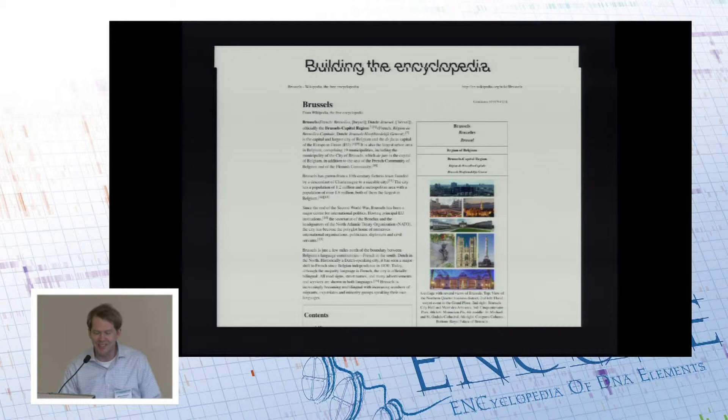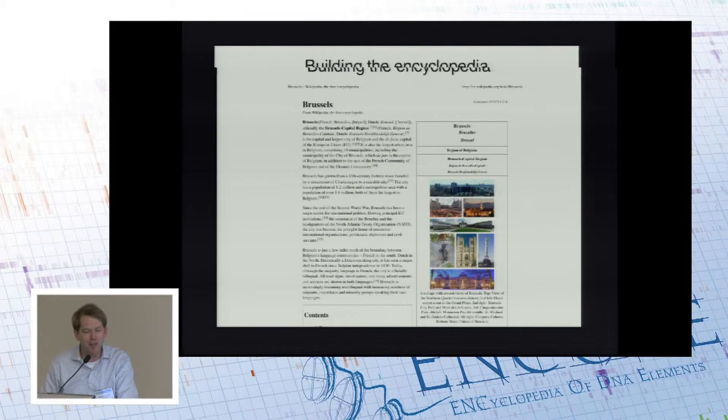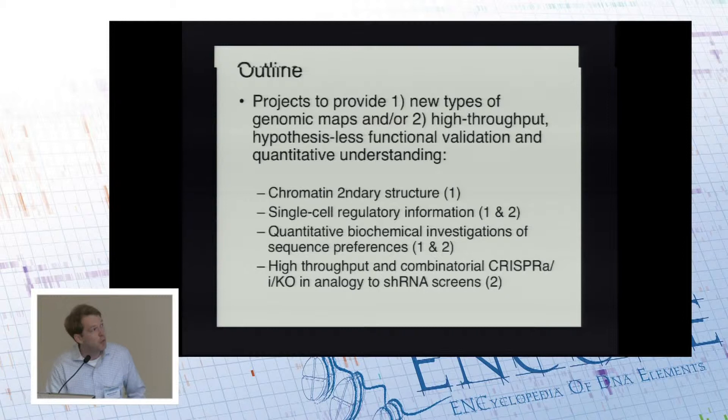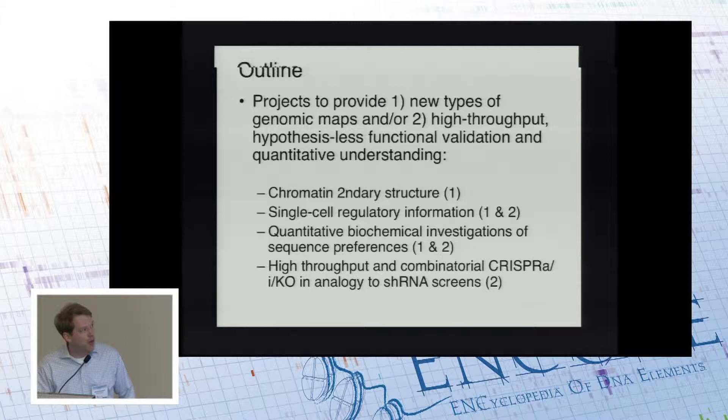For example, Brussels — this is a regulatory element in my analogy — there's lots of interesting information here. This is from Wikipedia, which is crowdsourced. I think it's above my pay grade to determine whether that's a good model for ENCODE, but it might be worth thinking about. The other parts I'll be talking about will address how to actually get at functional relevance for these regulatory elements and understand what they're actually doing.